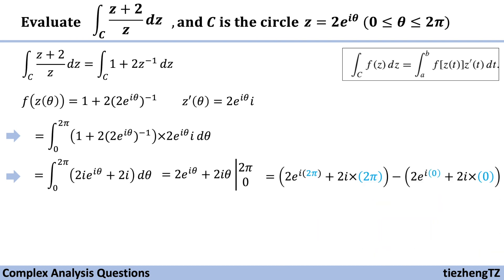So next, we just need to substitute 2 pi and 0 to the equation separately and do the math.